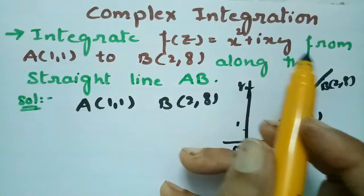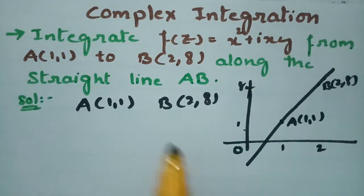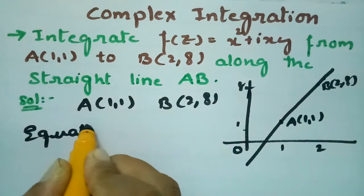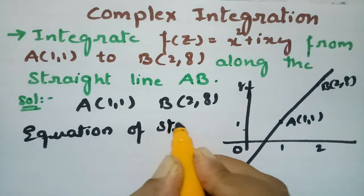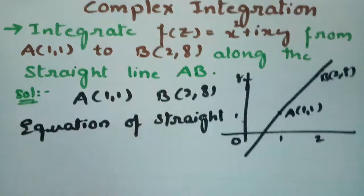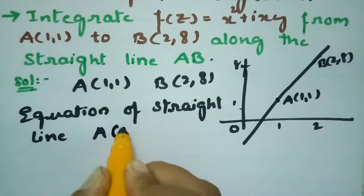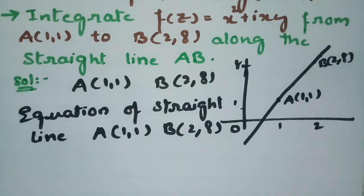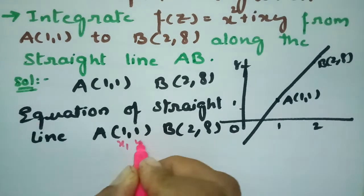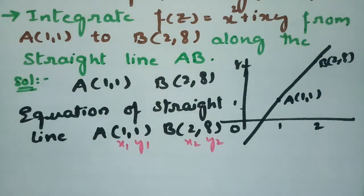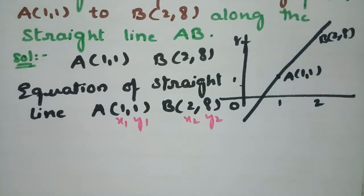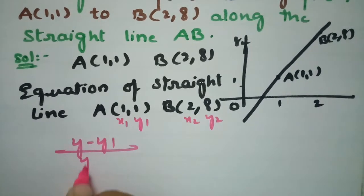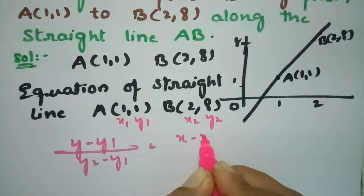So this is A to B along the straight line AB. The equation of the straight line passing through the two points A(1,1) and B(2,8) — here x₁ = 1, y₁ = 1, x₂ = 2, y₂ = 8. The formula is: (y − y₁)/(y₂ − y₁) = (x − x₁)/(x₂ − x₁).